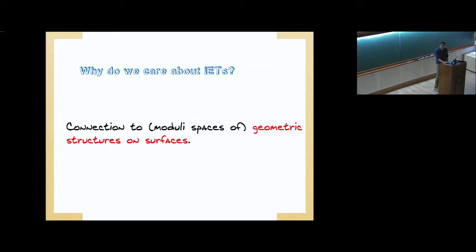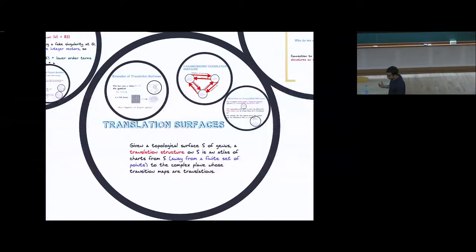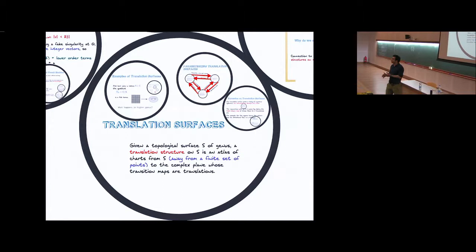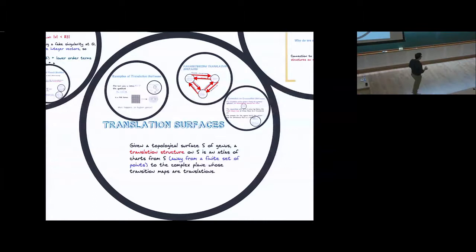Its connection to moduli spaces of geometric structures on surfaces is what we all care about in this room. These geometric structures on surfaces are precisely the things called translation surfaces, which were introduced by Stefano when he talked about branched projective structures. A branched projective structure had an atlas of charts away from a finite set of branch points where the transition maps are projective maps, and near the branch points you take a power. What if now I restrict? Certainly translations are projective transformations. So let me restrict to an abelian group — let's take all my charts to live in translations. We'll call that a translation structure or translation surface.